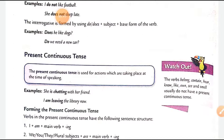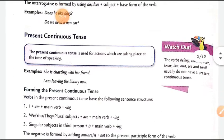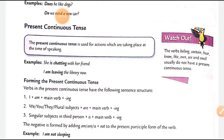These are the three structures: affirmative, negative, and interrogative for simple present tense. Next comes the present continuous tense. The present continuous tense is used for actions which are taking place at the time of speaking — jo continuously ho rahe hain. For example: 'She is chatting with her friends' — chatting continue hai, abhi chal rahi hai. 'I am leaving the library now' — leaving ho rahi hai, chal rahi hai.